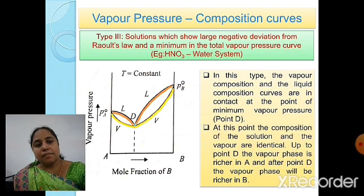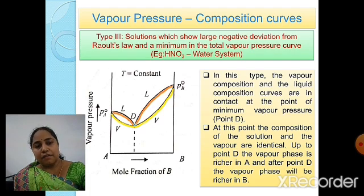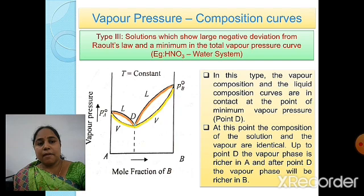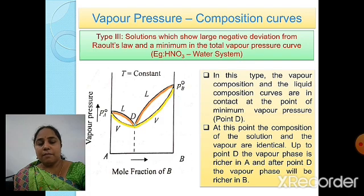At point D, the composition of the solution and the vapor are identical. Up to point D, the vapor phase is richer in A, and after point D, the vapor phase is richer in B.